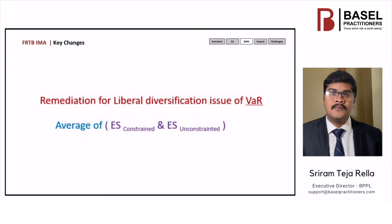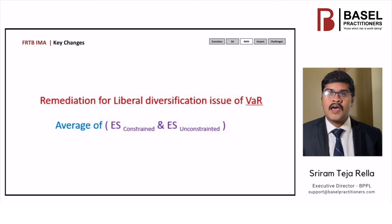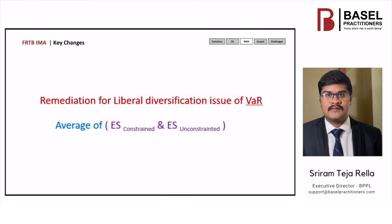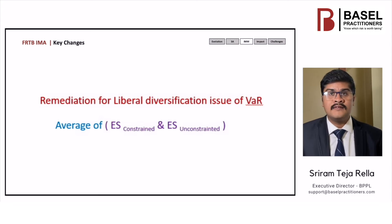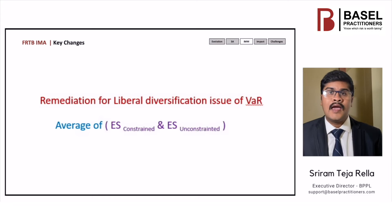Diversification issue. There is a liberal recognition of the risk-reducing effects of hedging and diversification. VAR has no constraint in recognizing hedging and diversification benefits across different asset classes, such as equities and forex, based on estimates of correlations derived from pre-crisis historical data. In a crisis, those diversification effects disappeared. Under ES, it calculates two versions: one with full diversification, which is unconstrained, and another with zero diversification, which is constrained, and takes the average. This addresses the diversification issue.